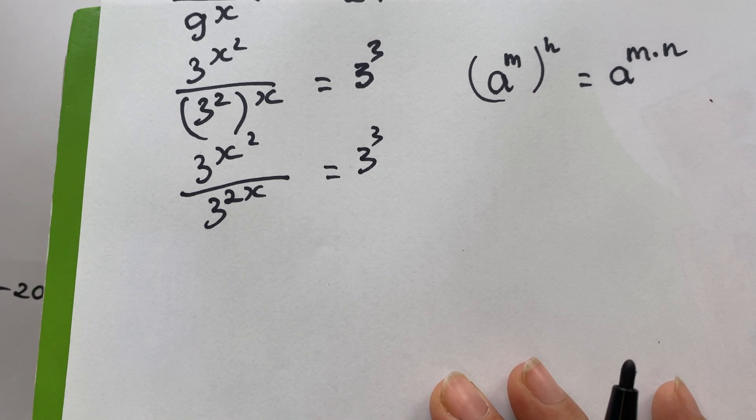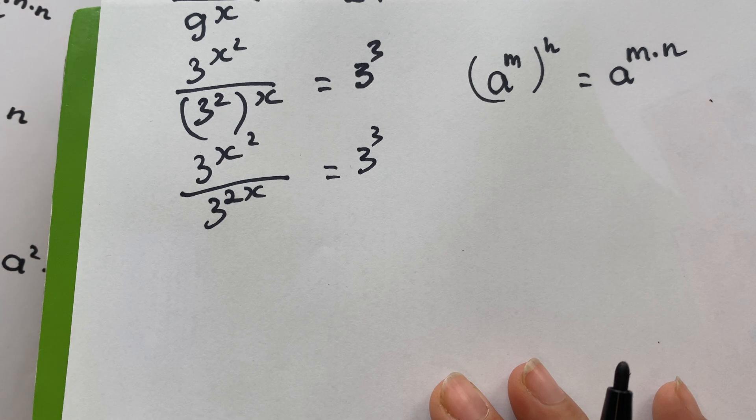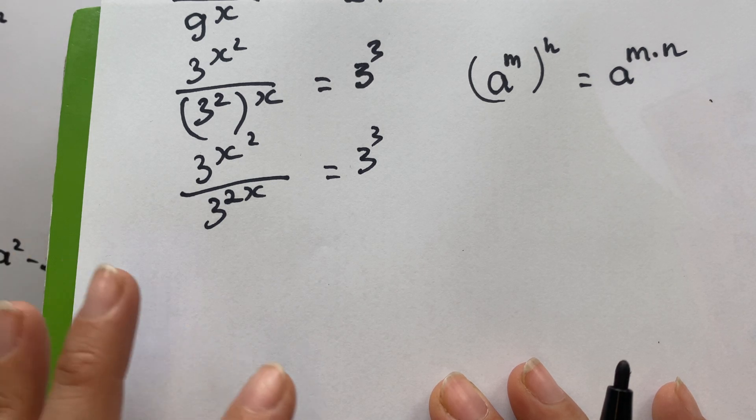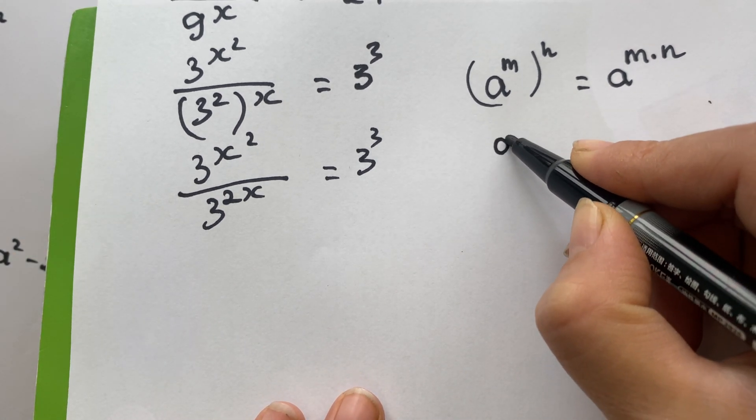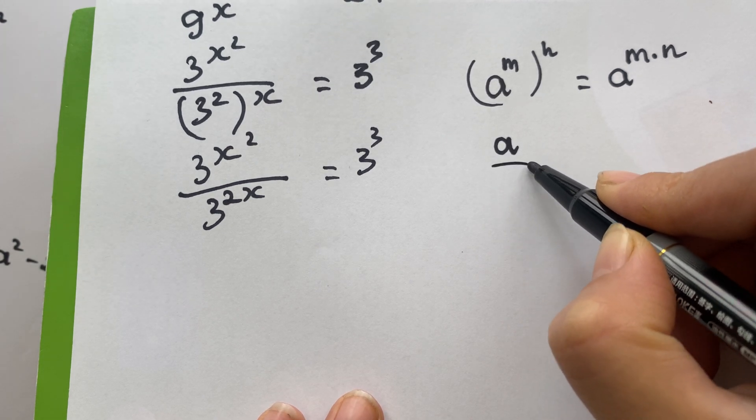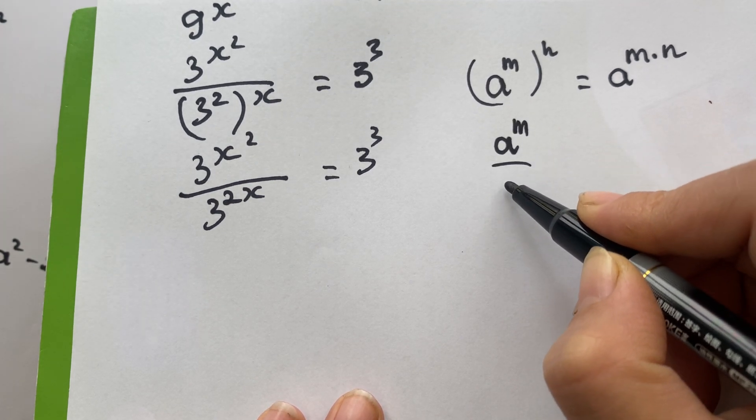We have A power m over A power n equals A power m minus n.